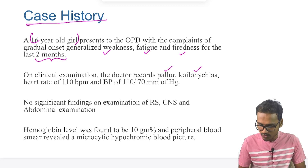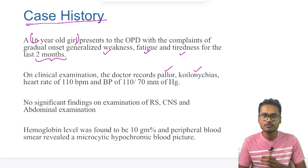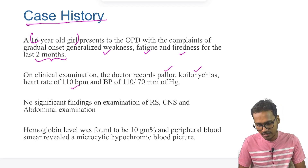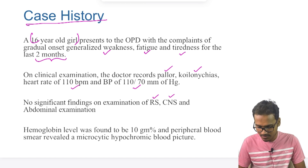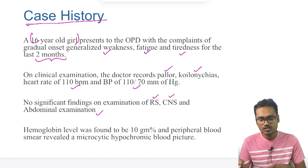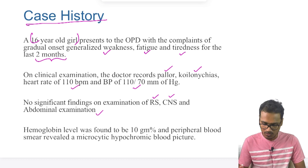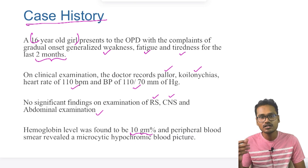On examination, the doctor records pallor — which is indicative of a particular type of disease — and koilonychia, which is a feature of spoon-shaped nails, commonly seen in one type of disease. Heart rate is 110 beats per minute and blood pressure is 110/70. Examination of the respiratory, cranial, central nervous, and abdominal systems revealed no significant findings.